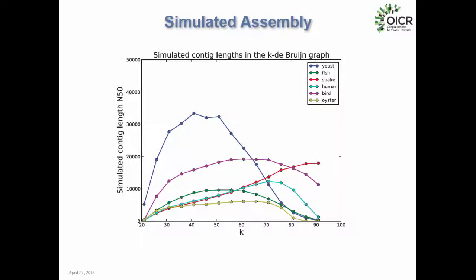preQC also runs a simulated assembly to indicate what to expect from the full genome assembly. It samples vertices from the graph, assesses connectivity, and outputs a distribution of expected contig lengths as a function of k-mer size for de Bruijn graph assembly. For example, yeast data with k=41 yields contigs of about 30,000 bases, while human data with k=71 yields about 10,000 bases — giving you a preview of results before spending days or a week on a full assembly.